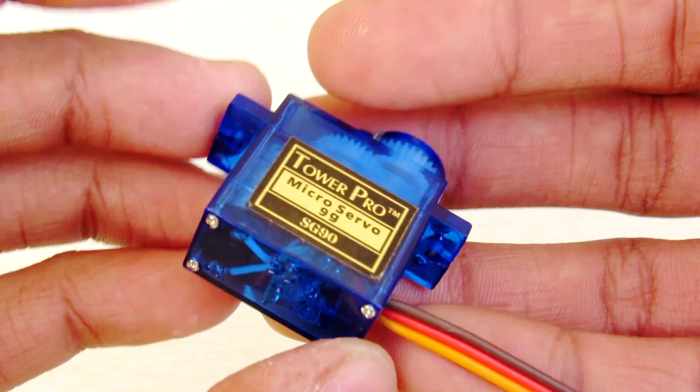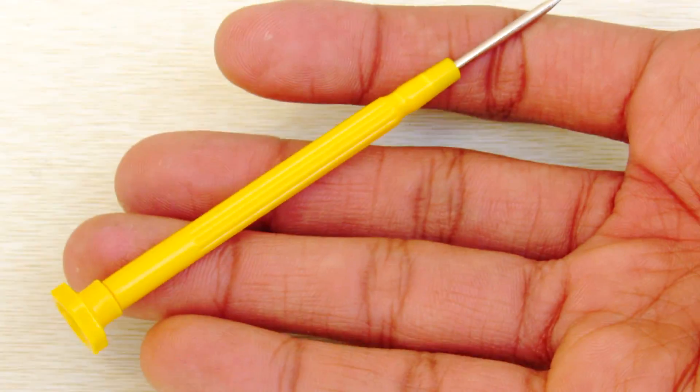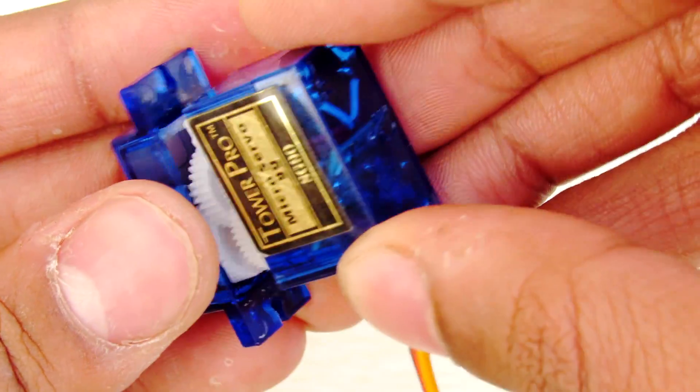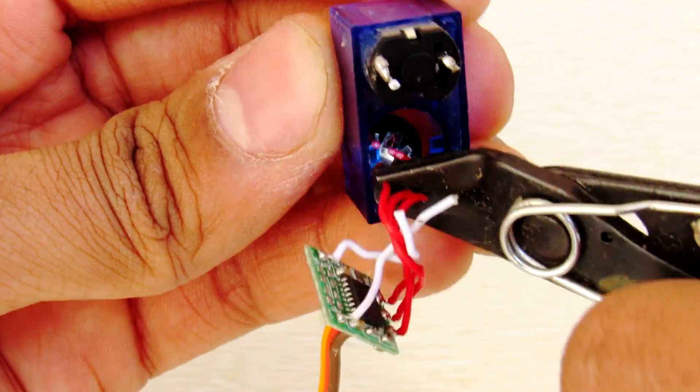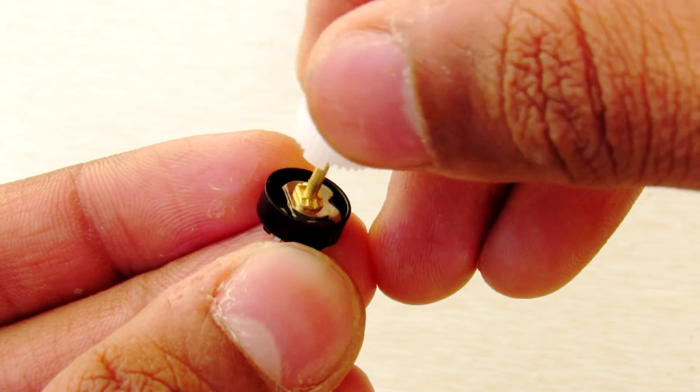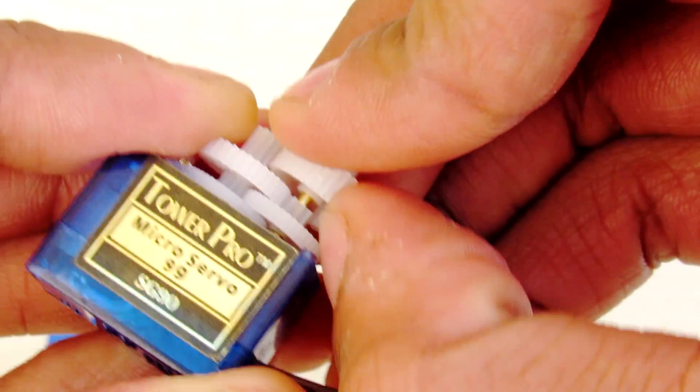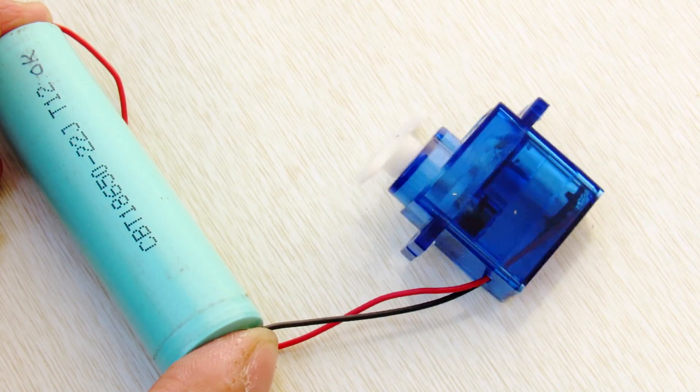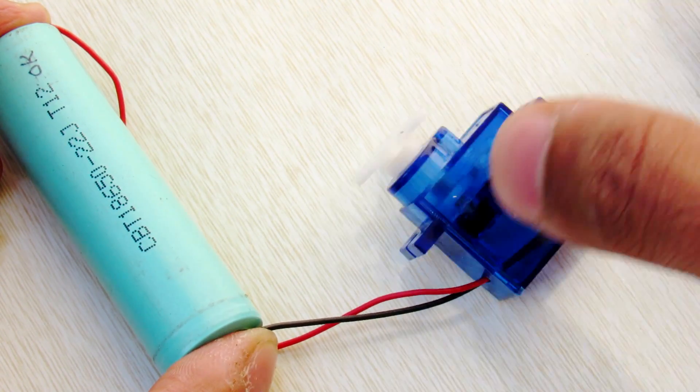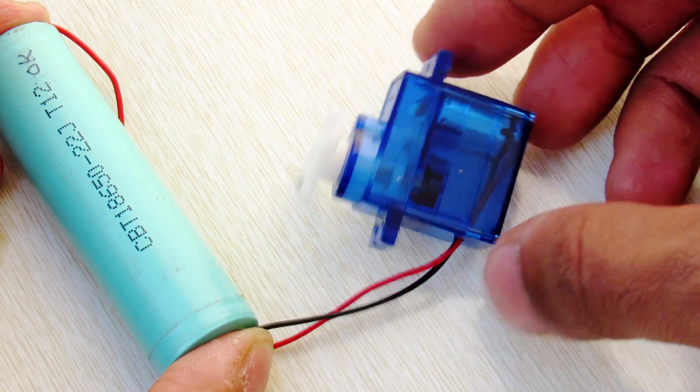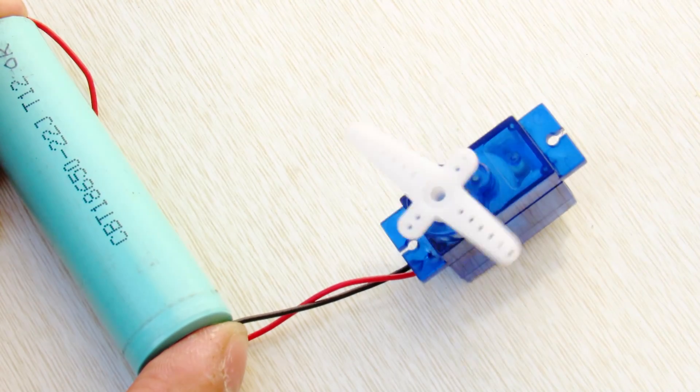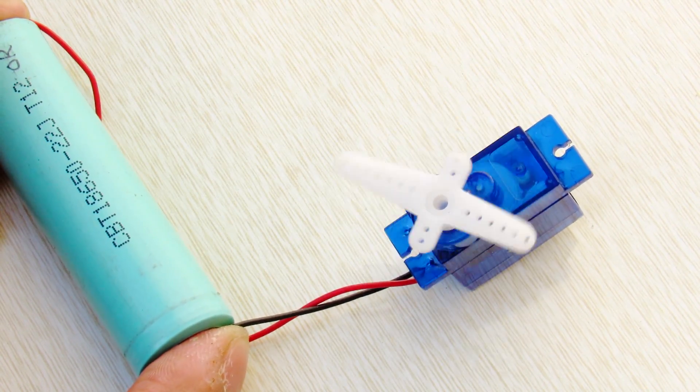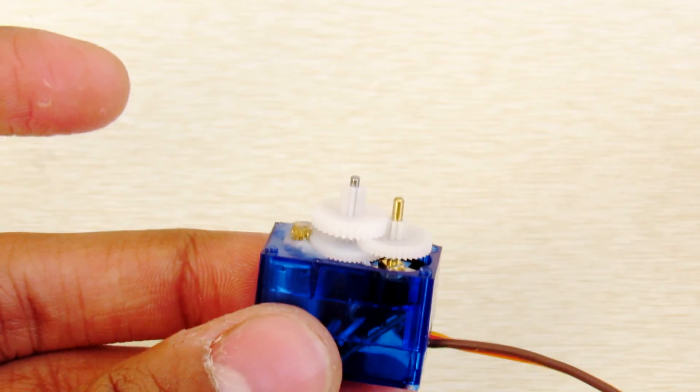First, open the servo with your normal screwdriver of course and remove this circuit along with the blocking part of the potentiometer. Cut this part of the gear to hack your servo for continuous rotation. Now your servo will rotate continuously when you apply power to it. The hard part is already done.